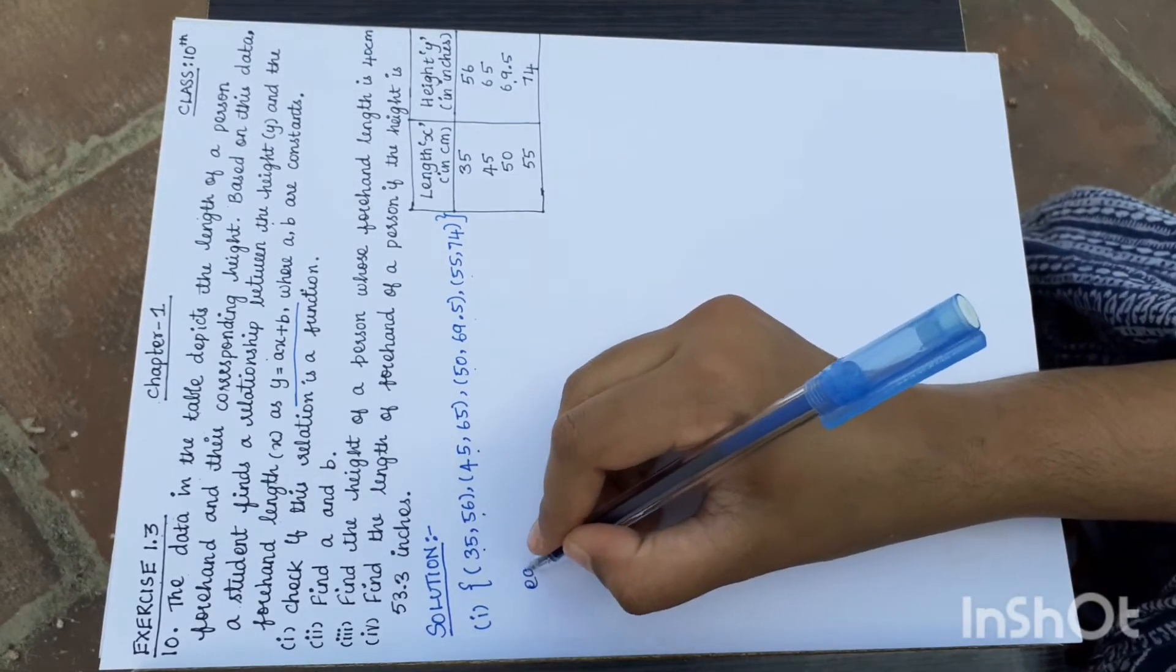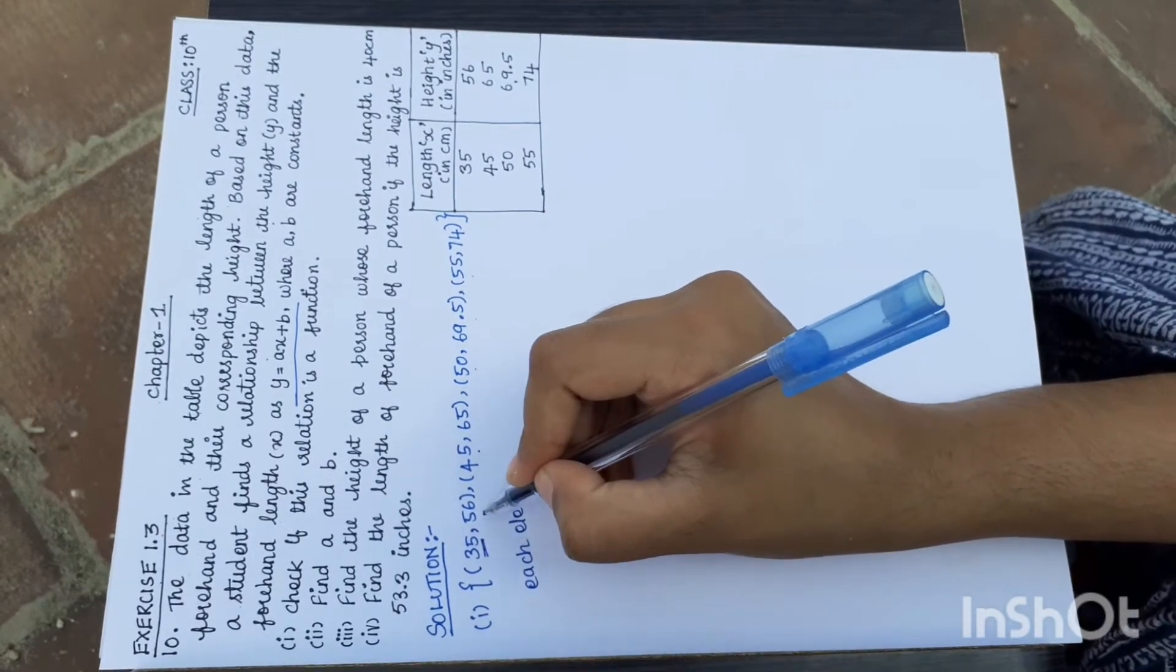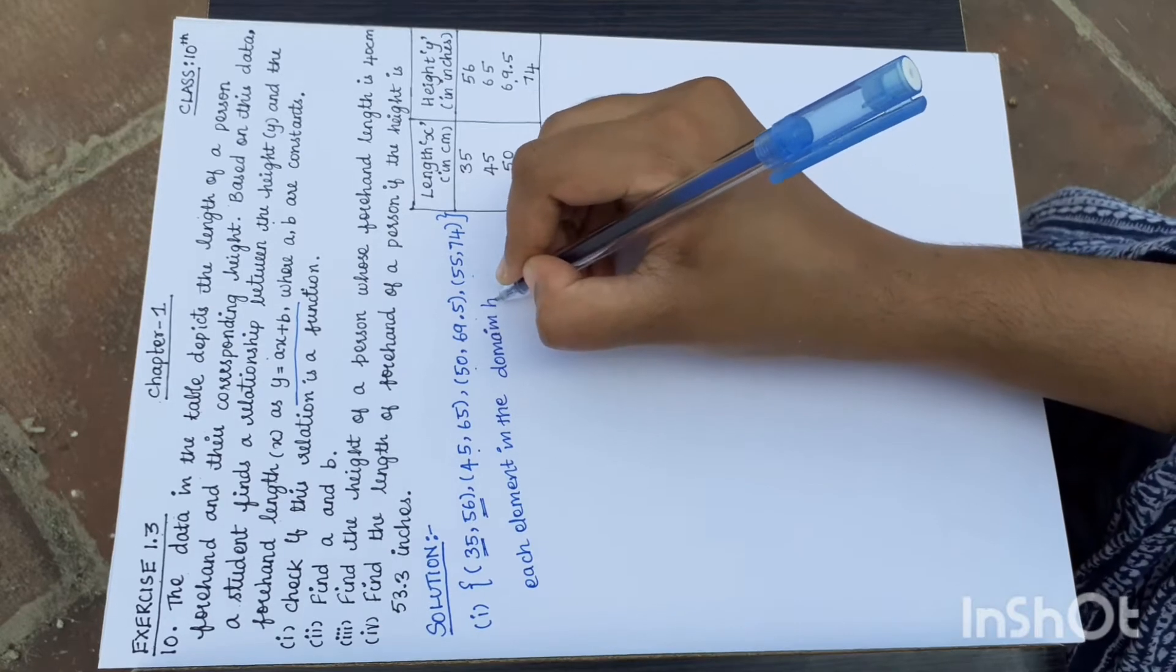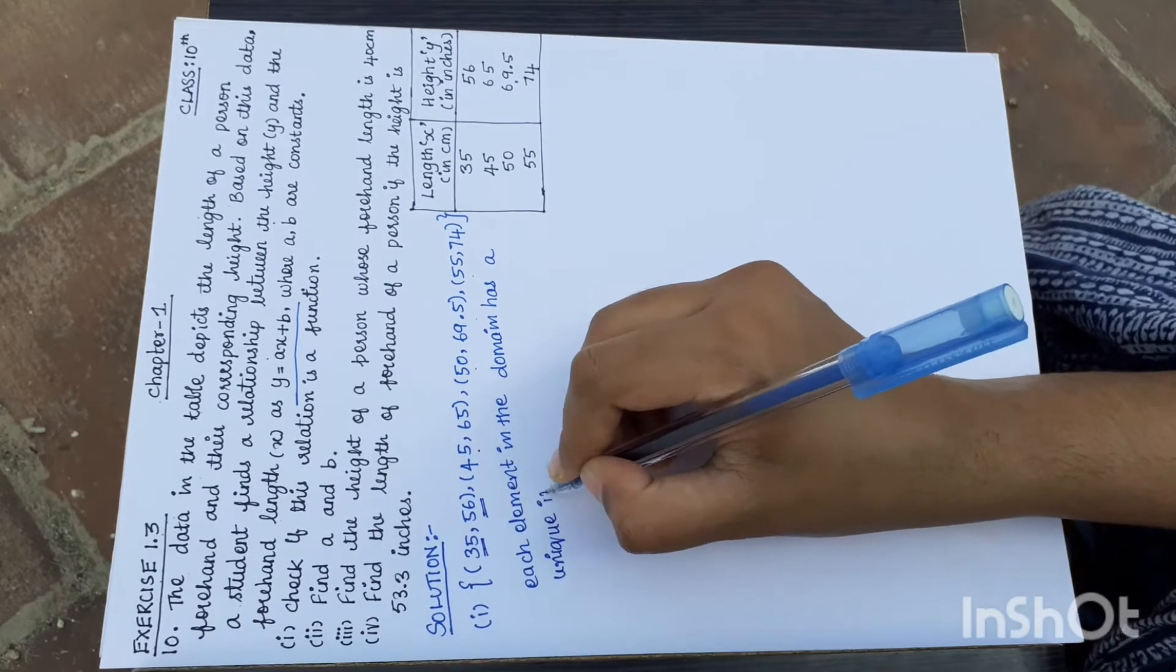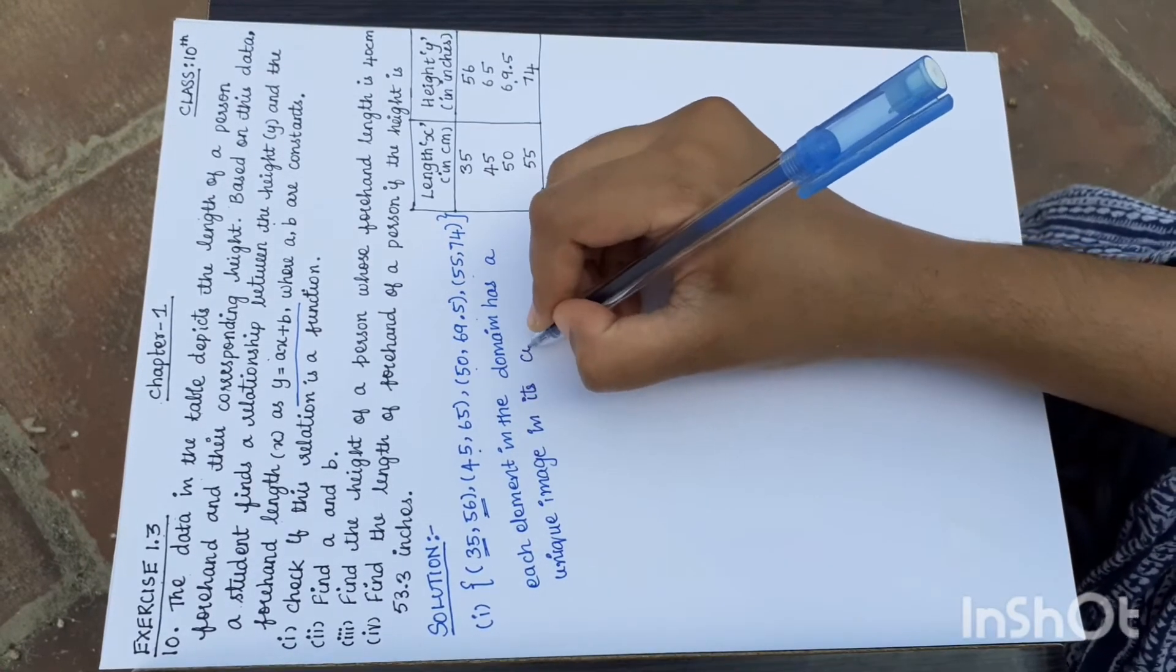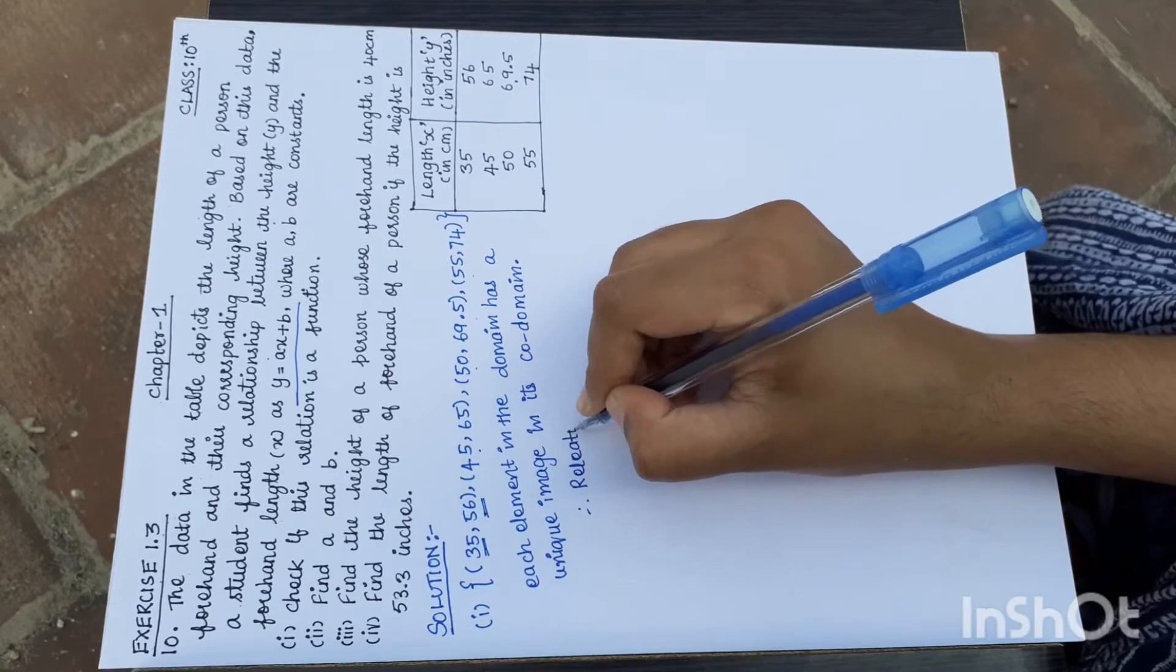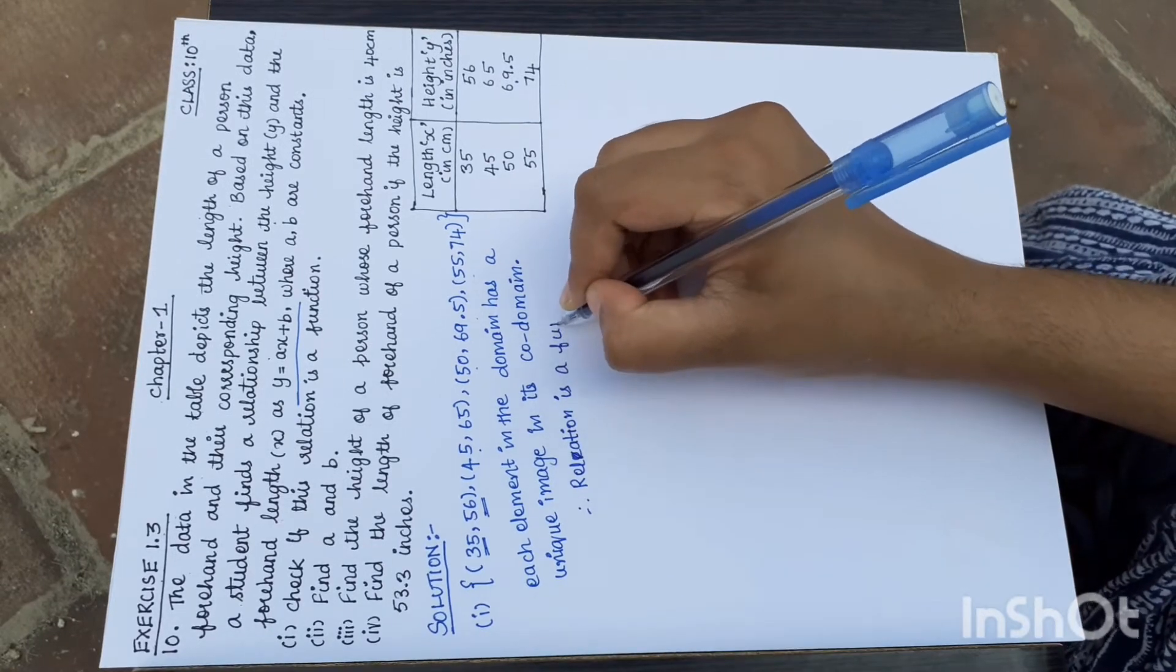We can say that each element in the domain has a unique image in its codomain. Therefore, this relation is a function.